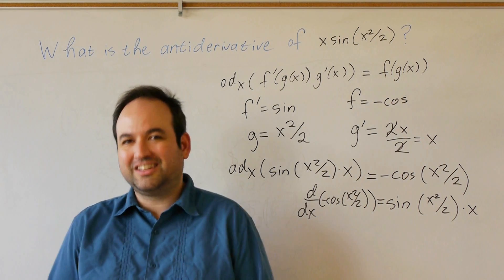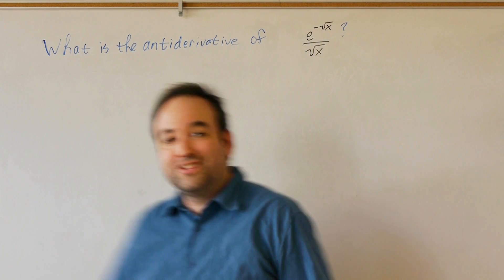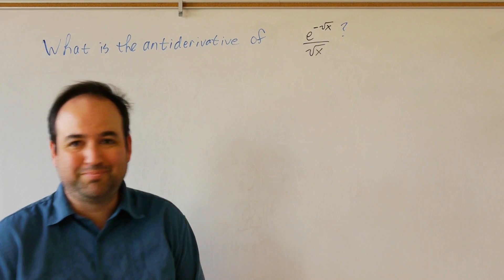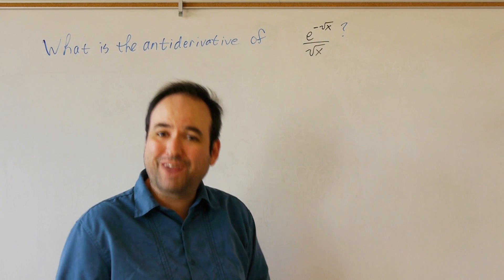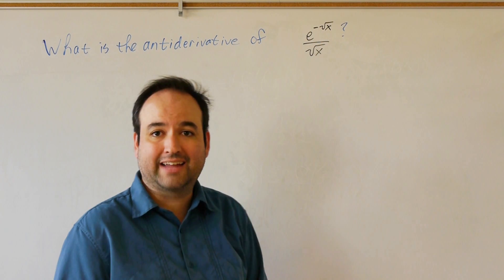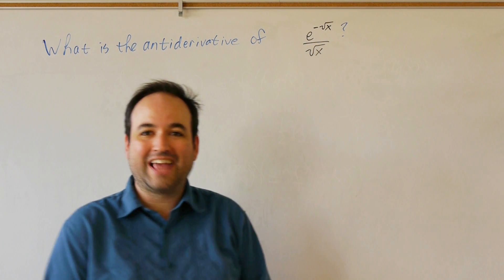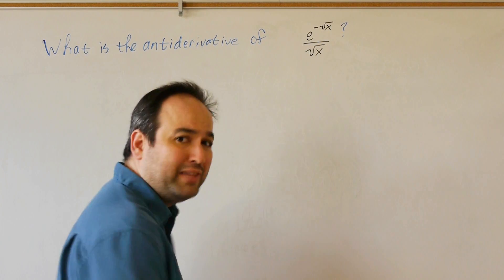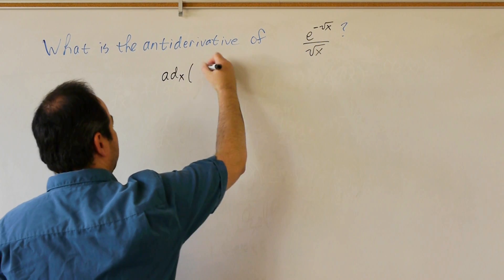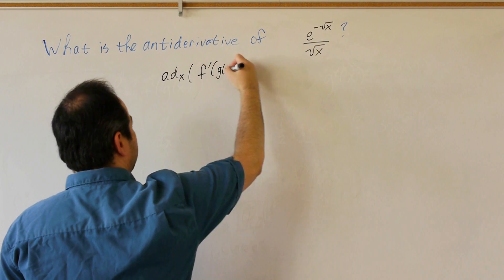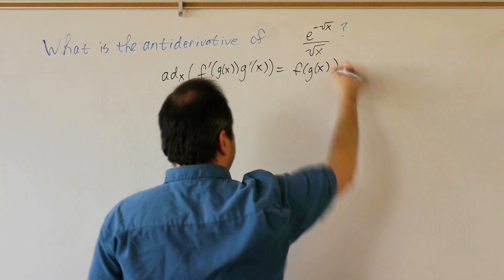Now there are more difficult examples we can tackle. Suppose we're trying to find the antiderivative of e raised to the negative square root of x power divided by square root of x. To apply our chain rule for antidifferentiation, we need to establish what f prime and g are. Remember our rule: the antiderivative of f prime of g of x times g prime of x is f of g of x.